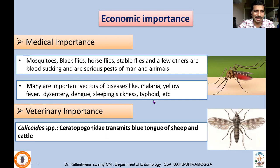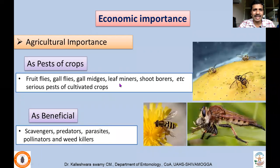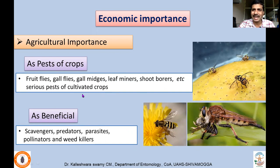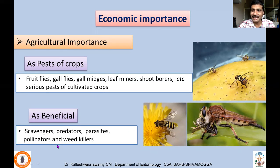In veterinary contexts, for example, Culicoides species belonging to family Ceratopogonidae transmit bluetongue of sheep and cattle. In agricultural ecosystems, they are important pests of crops — fruit flies, gall flies, gall midges, leaf miners, and shoot borers cause serious damage to cultivated crops. However, a few are beneficial as scavengers, predators, parasites, and pollinators, and even help in removing weeds.